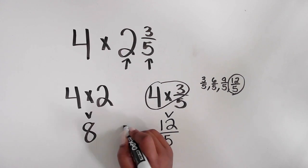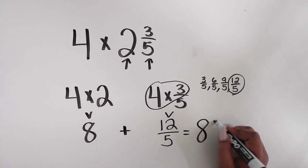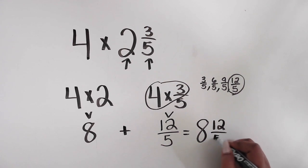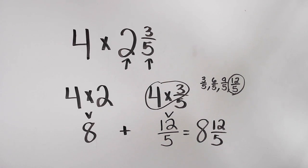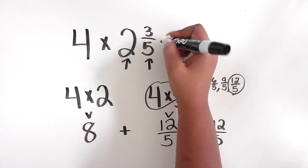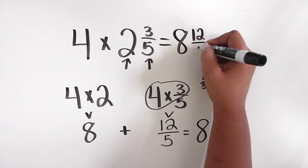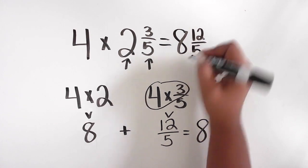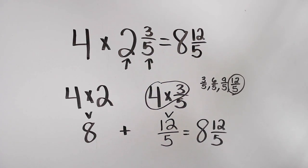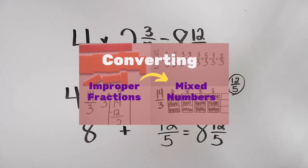Lastly, join those partial products together just like before. Add the 8 and the 12 fifths together and you now have 8 and 12 fifths. This is a mixed number which does have a fraction greater than 1. This can be left the way it is, or can be converted to a mixed number without a fraction greater than 1, which I've explained before in this video — I'll put the link in the description below.